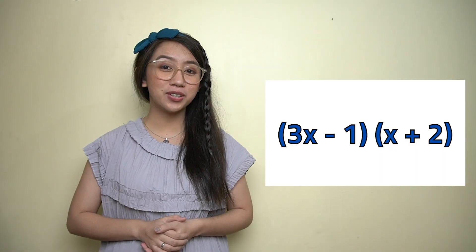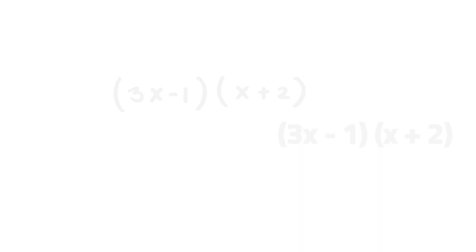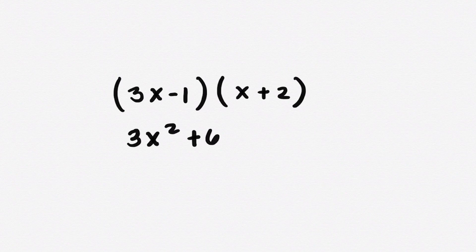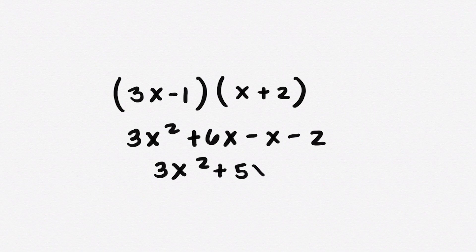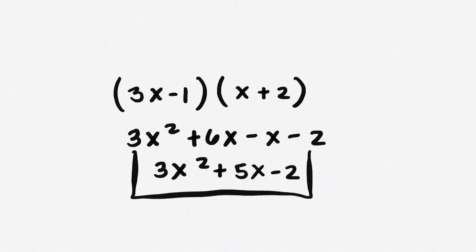Now can you try solving this on your own using the FOIL method? F — multiply the first terms. O — multiply the outer terms. I — multiply the inner terms. L — multiply the last terms. Then simplify the terms. Therefore, the final product is 3x squared plus 5x minus 2.